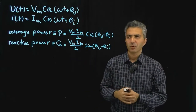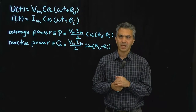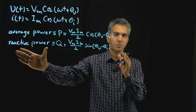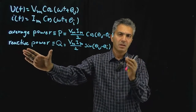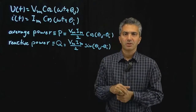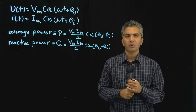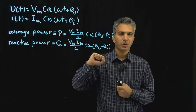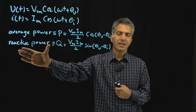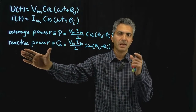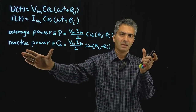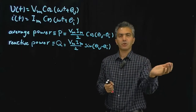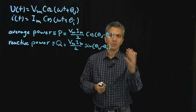This energy comes back to the circuit alternately at a frequency twice that of the voltage or current, which is why we call it reactive power — associated with reactive components. Capacitors and inductors are called reactive components, as opposed to resistors. The basic functionality of a reactive component is that it takes energy and conserves it as potential or kinetic energy, and that energy can come back to the circuit.